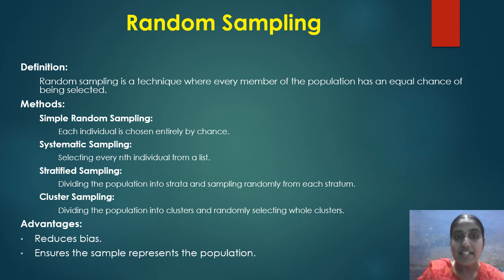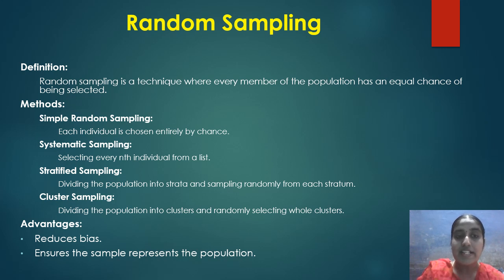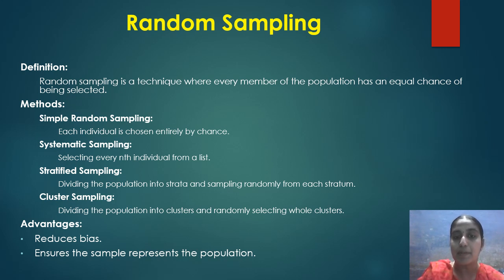Random sampling is a technique where every member of the population has an equal chance of being selected. Methods include: simple random sampling, where each individual is chosen entirely by chance; systematic sampling, selecting every nth individual from a list; stratified sampling, dividing the population into strata and sampling randomly from each; and cluster sampling, dividing the population into clusters and randomly selecting whole clusters. Advantages include reduced bias and ensuring the sample represents the population.